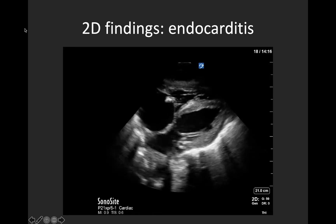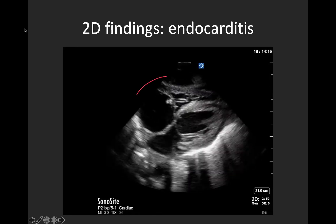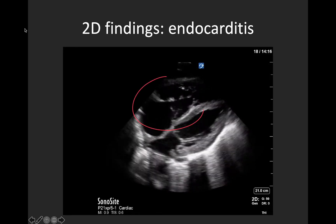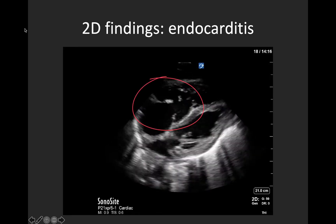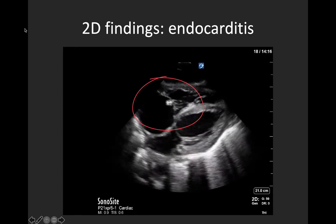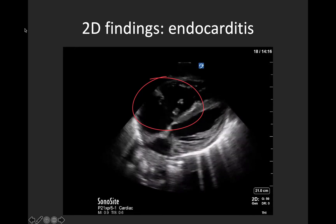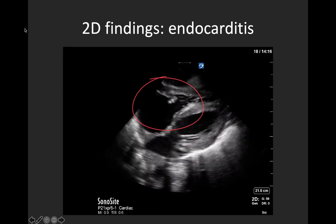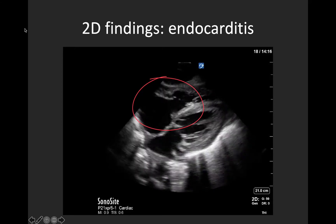Here we have an example in a sub-xiphoid view where we see a mobile hyperechoic density attached to the tricuspid valve. Note that the vegetation seems to live on the atrial side of the valve and flings into the ventricle as the valve opens.